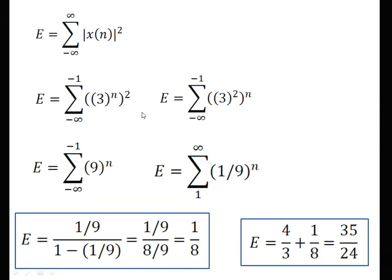Now, the next part is active on the negative side. The value is 3. We put the value of the signal; after that, the limit is from minus infinity to minus 1, giving 3²ⁿ. We exchange terms and get 9^n. We change the limit so n becomes minus n, giving the summation from 1 to infinity of (1/9)^n. Applying the formula c/(1−c) where c = 1/9, we get 1/8. Therefore, the total energy is 4/3 + 1/8 = 35/24.